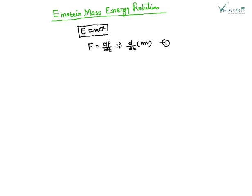According to the theory of relativity, both mass and velocity are variable. We differentiate by the product rule, so F equals m·dv/dt plus v·dm/dt. This is equation number two.